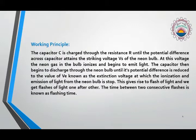Working principle of this experiment: The capacitor C is charged through the resistor R until the potential difference across capacitor attains the striking voltage of the neon bulb. At this voltage, the neon gas in the bulb ionizes and begins to emit light. In other words, the striking potential is the voltage or potential at which the neon bulb starts glowing.